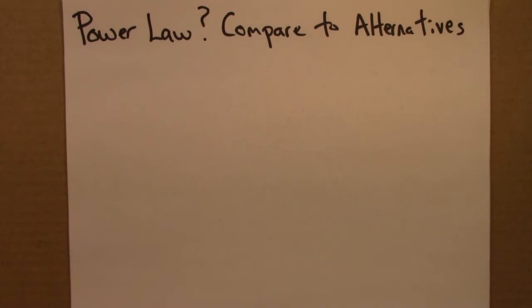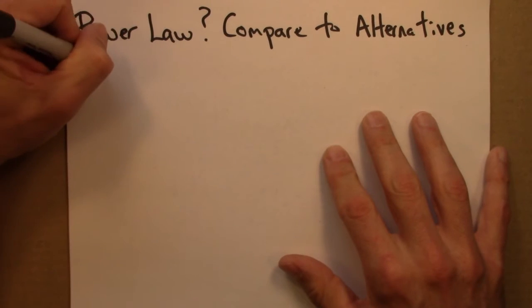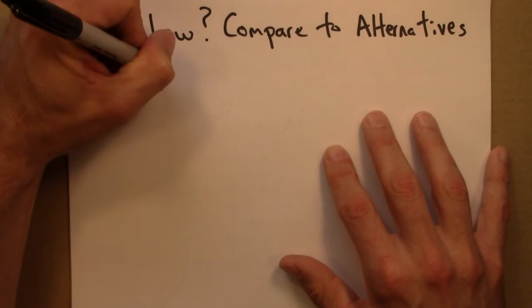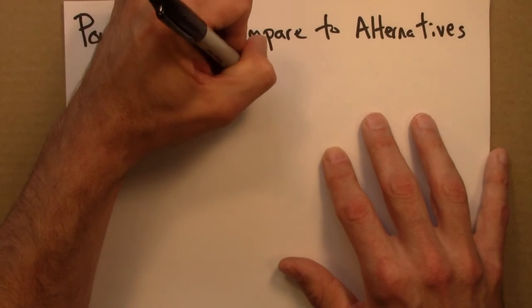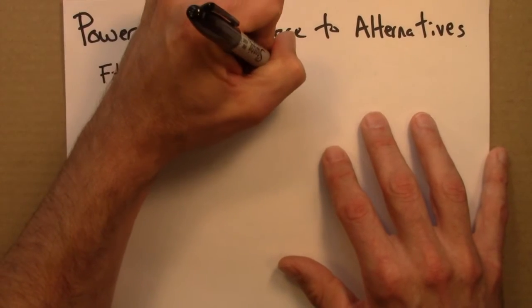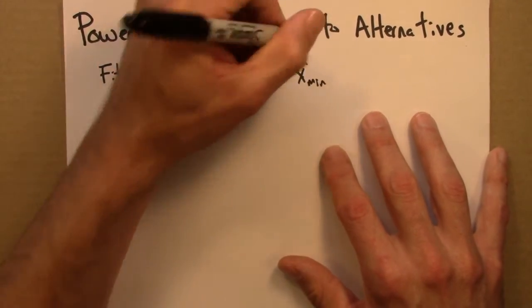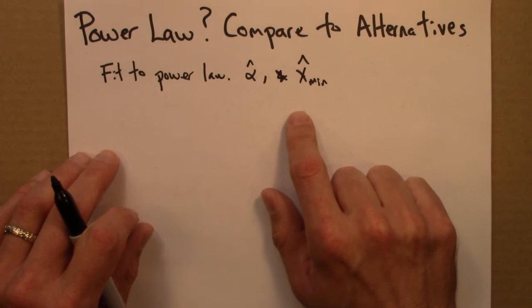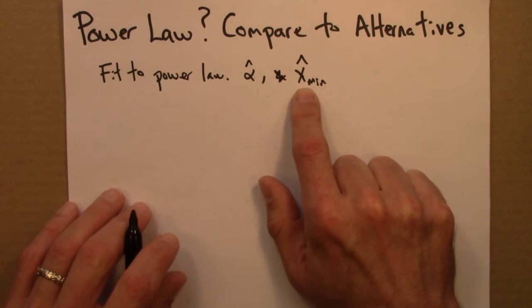So the picture is that you have some data, and you might do a power law fit. You'd fit to the power law, and so you'd get an alpha hat and an xmin hat. So you'll get your best estimators for the exponent and for the lower cutoff for the power law behavior.